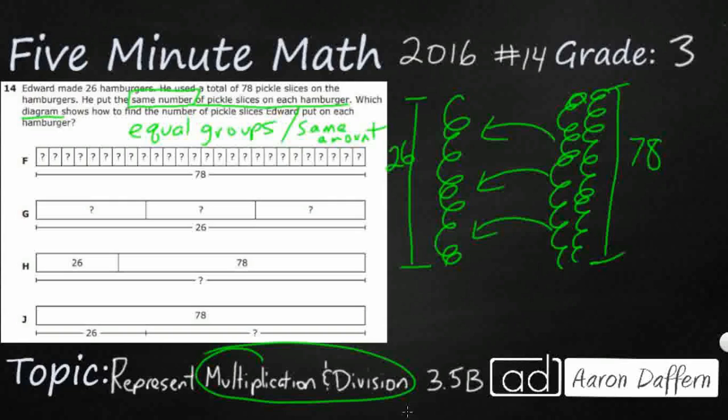So when we are looking at strip diagrams, and that's what these are down here, so let me just write that. These are called strip diagrams. You might be familiar with these as part-part-whole. And a part-part-whole is one kind of strip diagram. There are a few others.